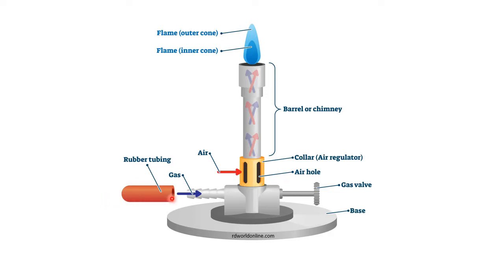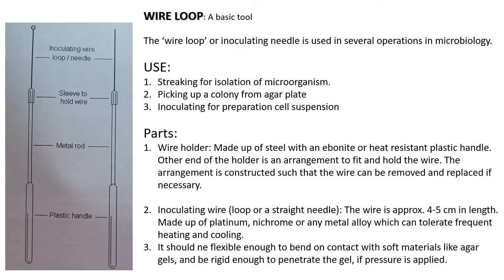You can see the rubber tubing from which the gas flows inside the burner. This is the air hole — the air hole should be open so that you get a proper flame. This is the barrel or chimney through which the gas passes further through the wire gauze, a small mesh-like gauze from which the gas passes out and when you ignite it you get a flame. The color of the outer flame depends on how much the gas is getting oxidized when it comes into contact with air. This is the gas valve to control the flow, and this is the base.